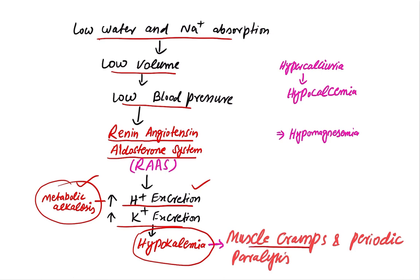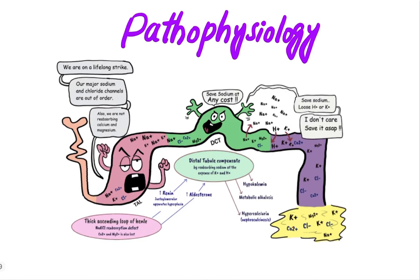The patient will present with muscle cramps and periodic paralysis. There is hypercalciuria in Bartter syndrome, and hypocalcemia. There is also some degree of hypomagnesemia. This is the pathophysiology of Bartter syndrome.